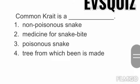I hope you are all enjoying. See the next question: 'Common crate is ___.' Option one: non-poisonous snake. Option two: medicine for snake bite. Option three: poisonous snake. Option four: trees from which bean is made. Remember the poisonous snake names discussed in class. What will be the answer students?